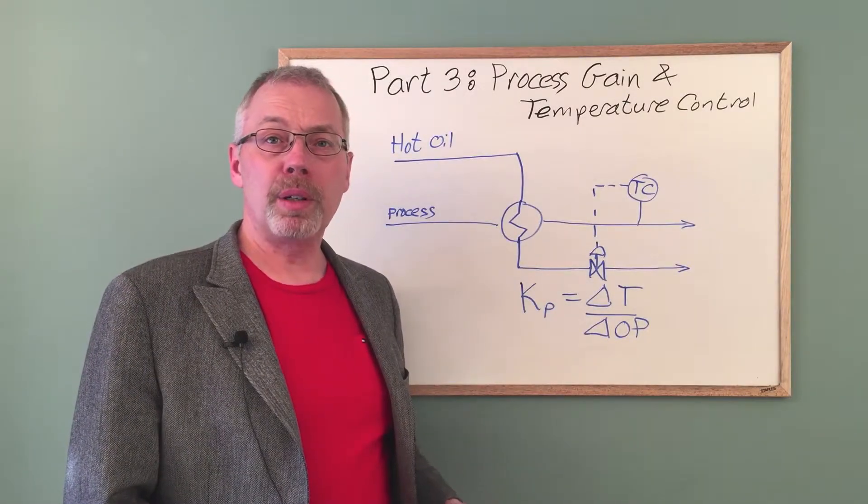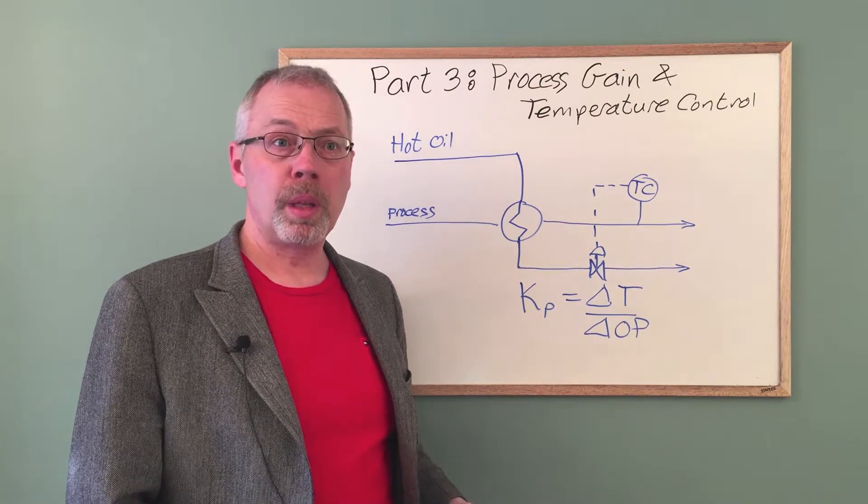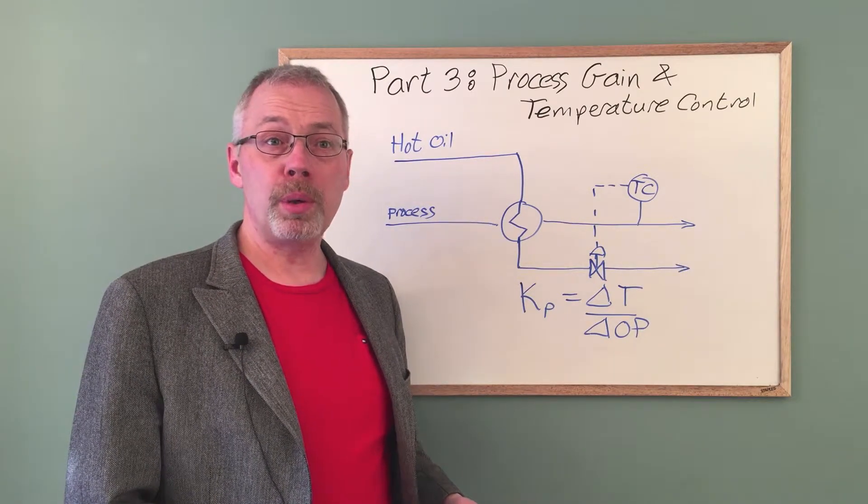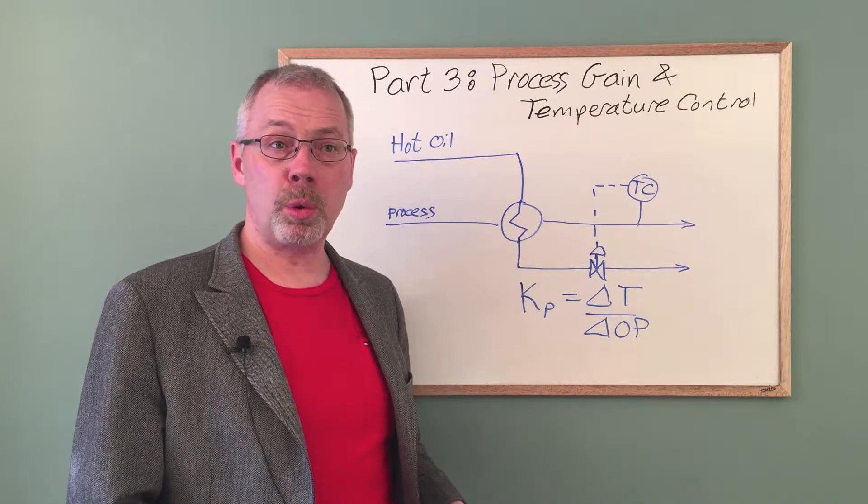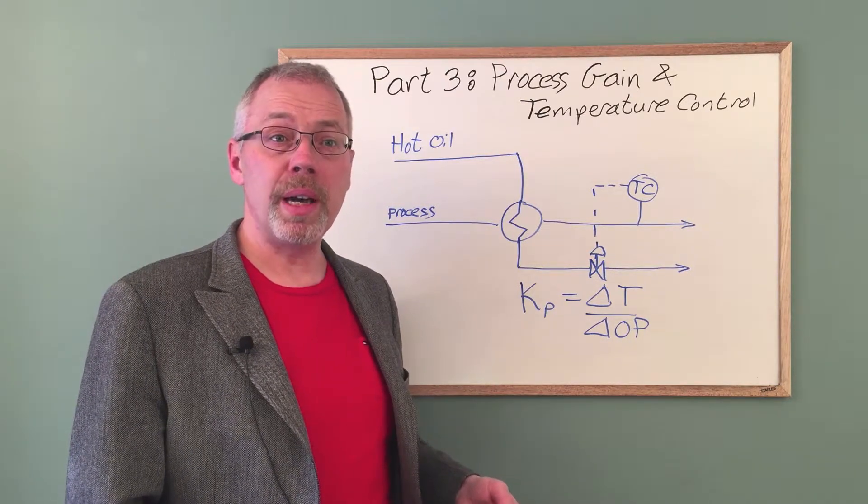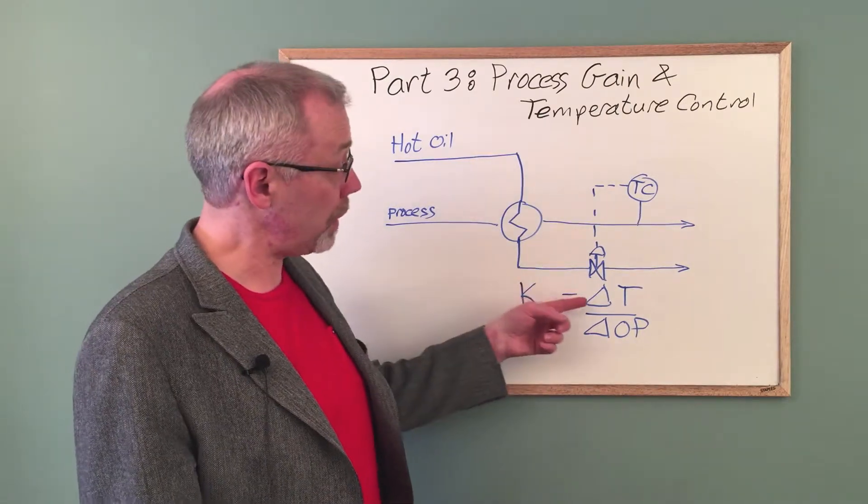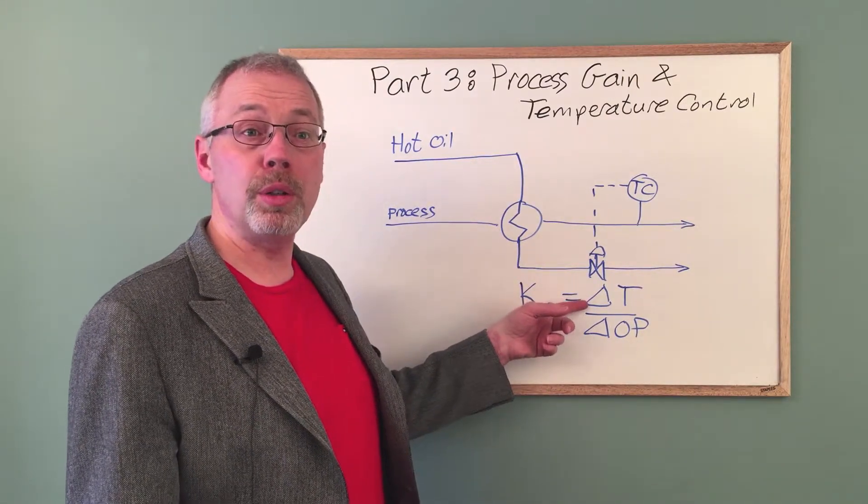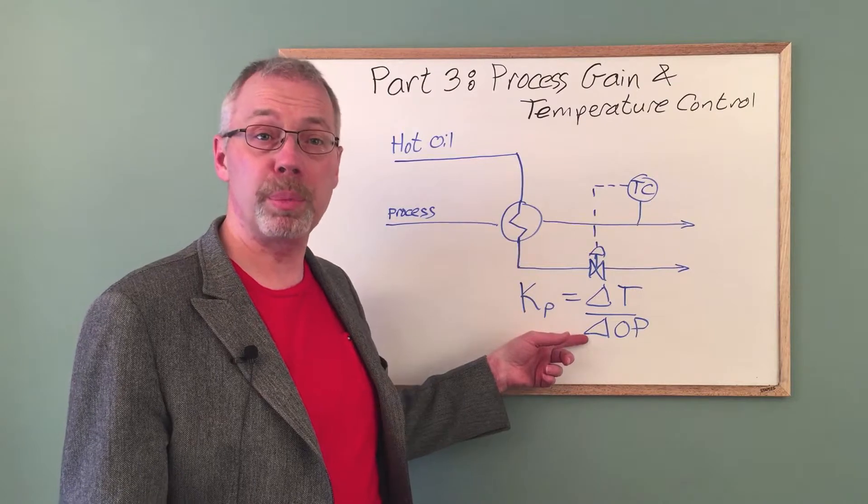This is a schematic for a typical temperature control loop. The objective is to hold the process temperature on set point by adjusting the control valve that supplies hot oil. Process gain defines how sensitive the control objective is to a change in the controller output, or valve position in this case.